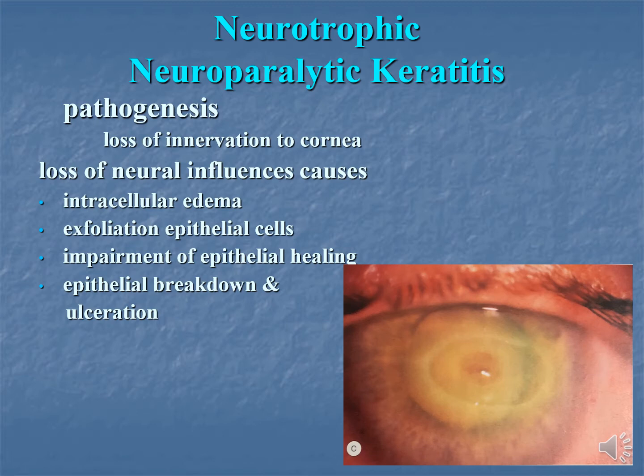Now we will discuss briefly neurotrophic and neuroparalytic keratitis. The pathogenesis is loss of innervation to the cornea. Due to this loss of innervation, the neuronal influences cause intracellular edema, exfoliation of the epithelial cells, impairment of epithelial healing, and ultimately epithelial breakdown and ulceration occur.